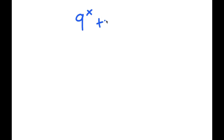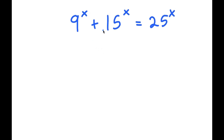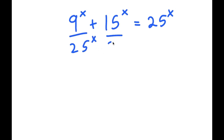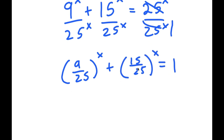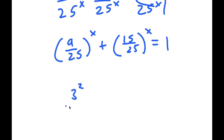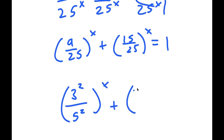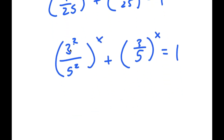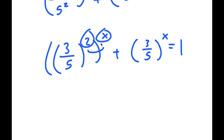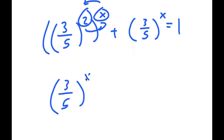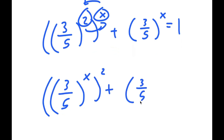In this video, I'm going to be solving the equation 9 to the power of x plus 15 to the power of x is equal to 25 to the power of x. I'm going to first start by dividing every term by 25 to the power of x. So these two cancel out to get 1, and now I have 9 over 25 to the power of x plus 15 over 25 to the power of x is equal to 1. Now 9 over 25 I can rewrite as 3 squared over 5 squared, and 15 over 25 is the same thing as 3 over 5. So 3 squared over 5 squared is the same thing as 3 over 5 squared, and now I have 3 over 5 squared to the power of x plus 3 over 5 to the power of x is equal to 1.